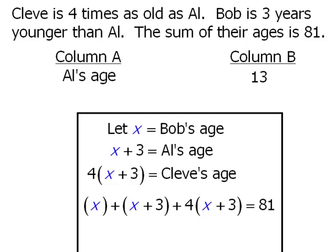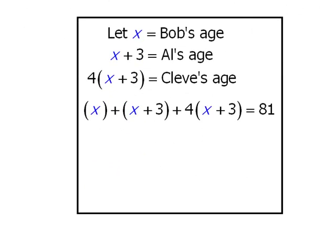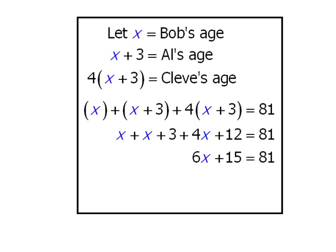We can now solve this equation for x. First we'll expand four times x plus three. Now we'll simplify the left-hand side. Now we'll subtract 15 from both sides, and finally we'll divide both sides by six to get x equals 11.